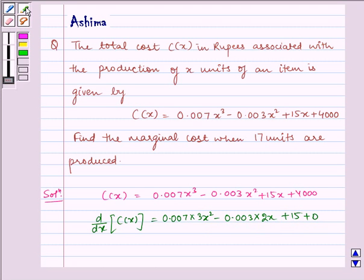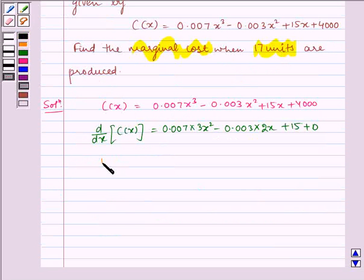It is given to us that marginal cost equals 17 units. Therefore, when x equals 17, that is the marginal cost.